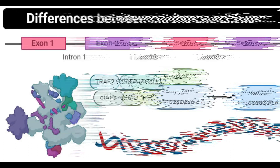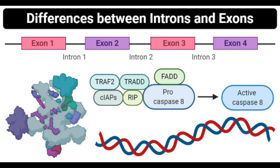Exons Definition: Exons are protein-coding DNA sequences that carry the necessary codons or information necessary for proteins. The term exon represents the expressed region present in the genome. The genes in eukaryotes are formed of coding exons separated by non-coding introns. During RNA splicing, the introns between the exons are removed to connect the exons, which then code for messenger RNA.